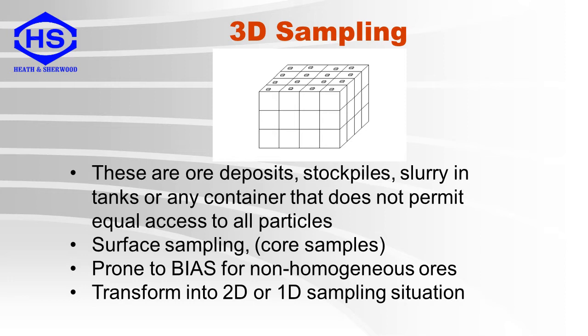Here is an example of three-dimensional sampling. These can be ore deposits, stockpiles, slurry in tanks, or any container that does not permit equal access to all particles. Sampling is usually done by surface sampling, for example core samples. This is prone to bias for non-homogeneous ores. These can sometimes be transformed into 2D or 1D sampling.